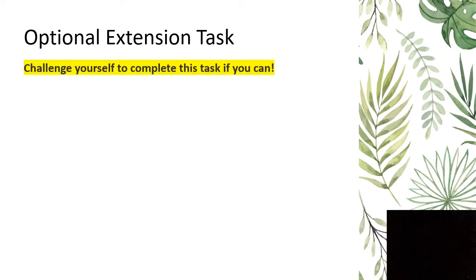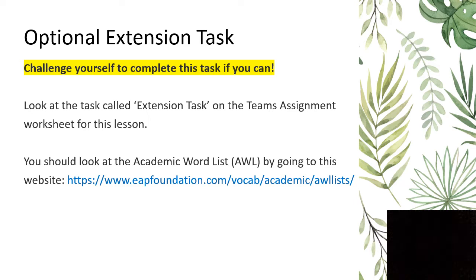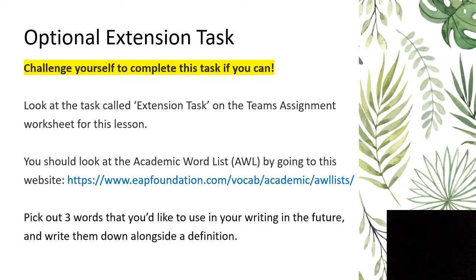The next task is an optional extension task. If you're feeling like you've done really well and want to push yourself a little bit more, then you can try this one. It's towards the bottom of the worksheet and is called extension task. What I'd like you to do is look at the academic word list — you can follow the website link on the worksheet — and pick out three words you'd like to use in your writing in the future. Write them down alongside a short definition. Pause the video and try that now.